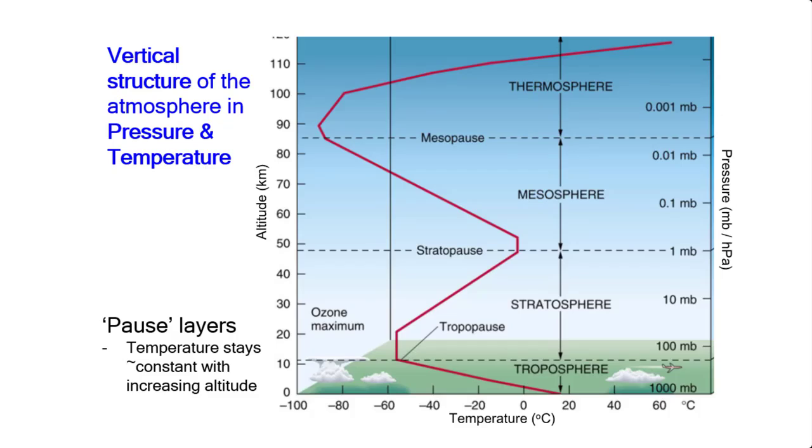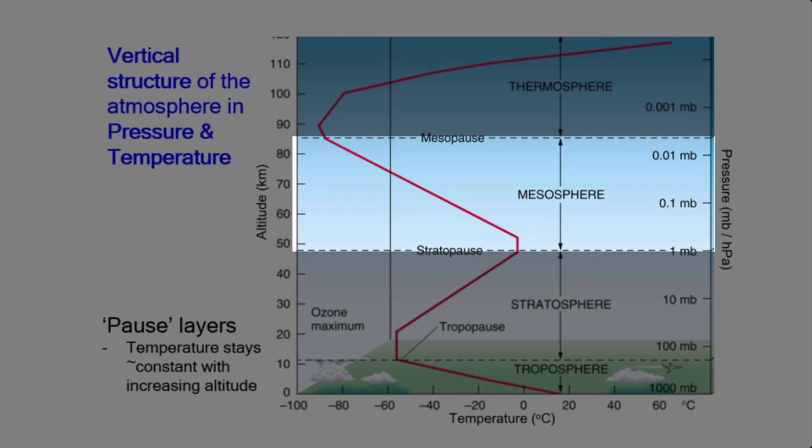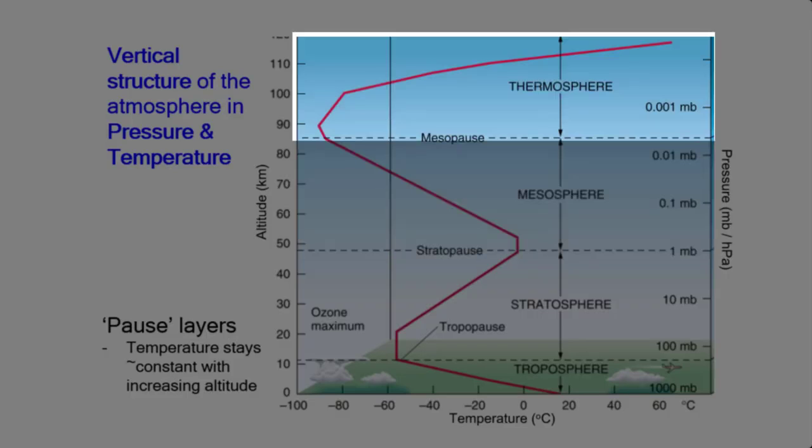But then as you move up the layers into the mesosphere, temperature decreases again. And by the time you get into the thermosphere there is very little atmosphere to protect us from sun's light so temperature increases with altitude.